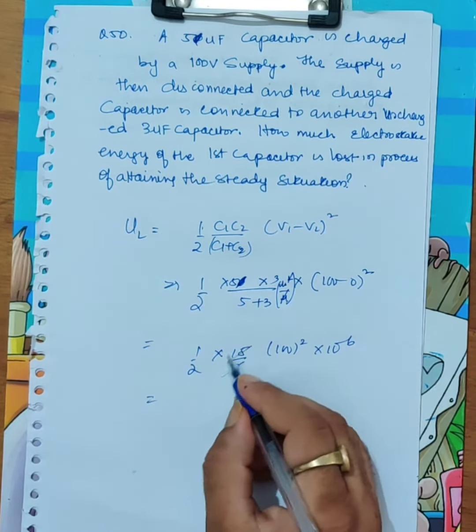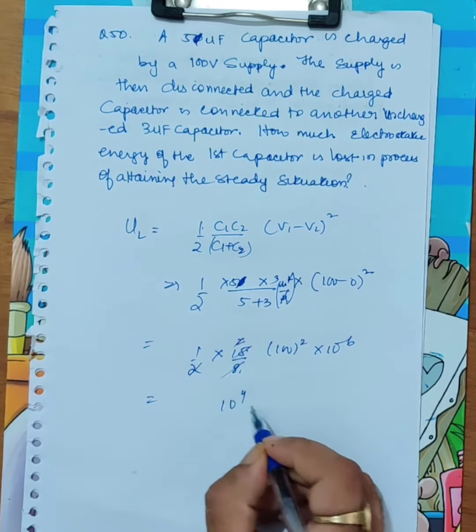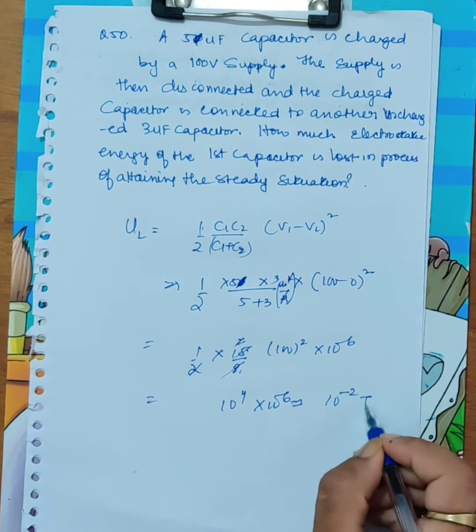How much is it? Two to two will be cancelled. 10 to the power 4 into 10 to the power minus 6 equals 10 to the power minus 2 joules.